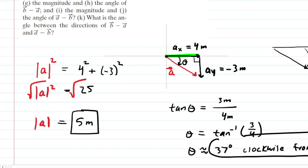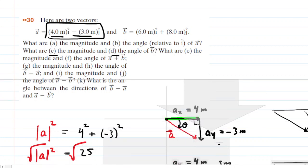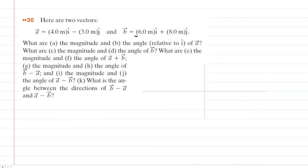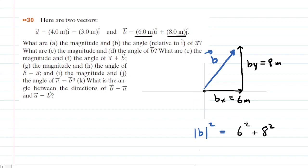In Parts C and D, we need the magnitude and angle for Vector B. Vector B has an X component of positive 6 and a Y component of positive 8. Starting at the origin, we go out along the positive x-axis a length of 6 meters — that's B sub X. Then we go straight up the y-axis 8 meters — that's B sub Y equal to 8 meters. Drawing the resultant gives us Vector B. Using the Pythagorean theorem, the magnitude of B squared equals 100, so the magnitude of Vector B is 10 meters. This is the correct answer to Part C.